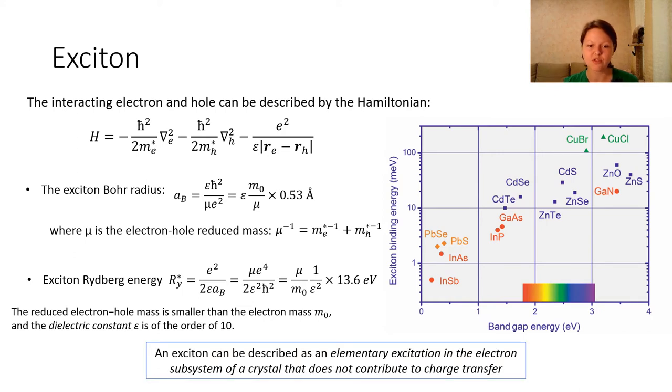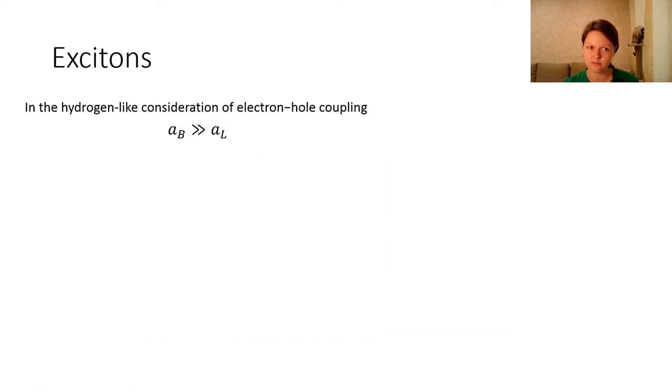An exciton can be described as an elementary excitation in the electron subsystem of the crystal. In the hydrogen-like consideration of electron-hole coupling, the exciton Bohr radius exceeds many times the crystal lattice constant or the size of the crystal elementary unit.